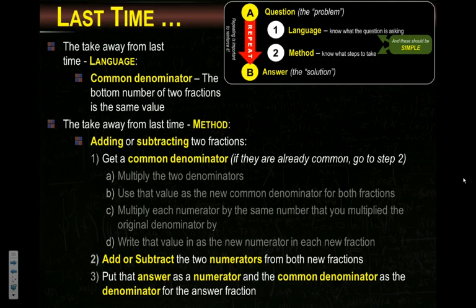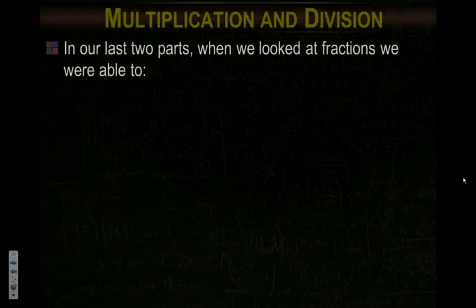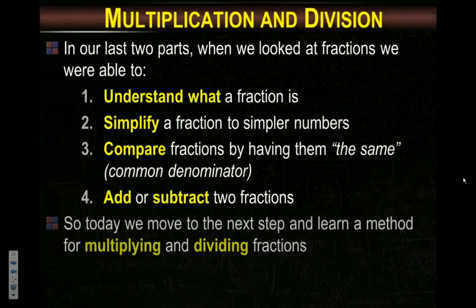So I gave you a method to subtract or add two fractions: get a common denominator. If you have one, move down to step two. But if you don't have a common denominator, the process was to multiply, use that value as a new common denominator, multiply each numerator, and write it in. Then add or subtract the two numerators, and you're done. You have your answer over that common denominator. It's honestly way easier to do multiplication and division, even though it would seem like it's not, it actually is.